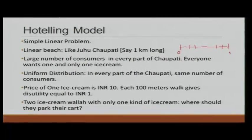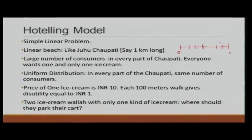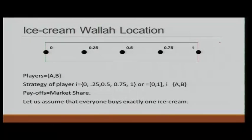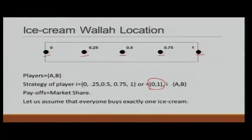For simplicity, we have only two ice cream vendors selling only one kind of ice cream. The question is: where should they park their cart? Should both park in the middle, or one at each end, or one at the quarter point of the first half and the other at the quarter point of the second half? Brihan Mumbai Municipal Corporation allows only five locations to park: 0, 0.25, 0.5, 0.75, and 1. We will solve this smaller discrete problem first.